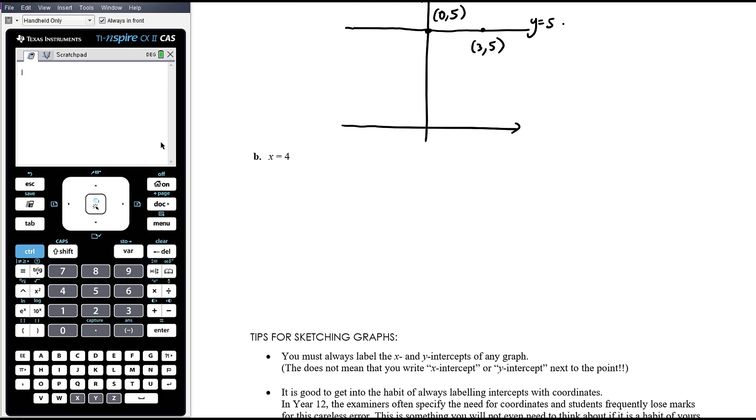X equals four. Again, that is the point where all of the x coordinates are four. So here's the point four zero. But then there's the point four one, four two, four three, four eight, four negative point five, four negative six point three, whatever it might be. So all of the points along that vertical line have an x coordinate of four.